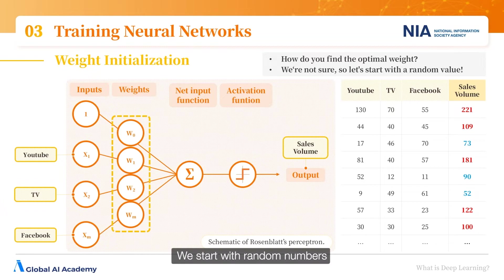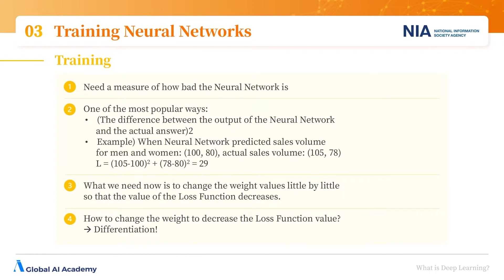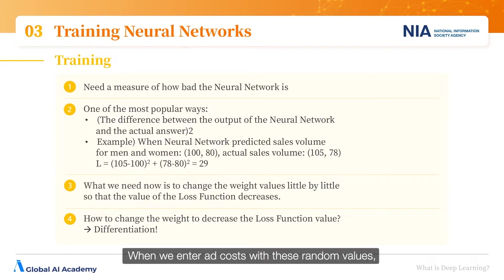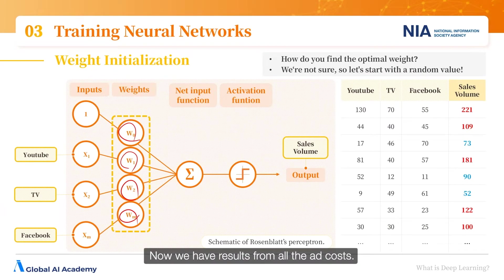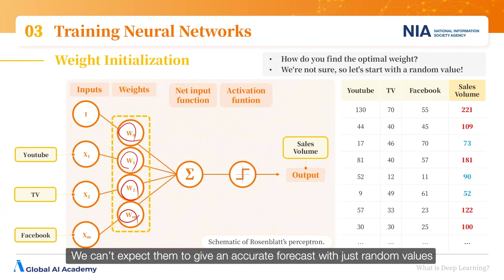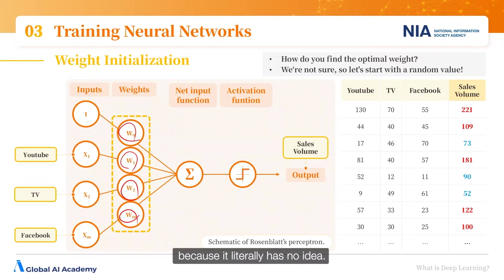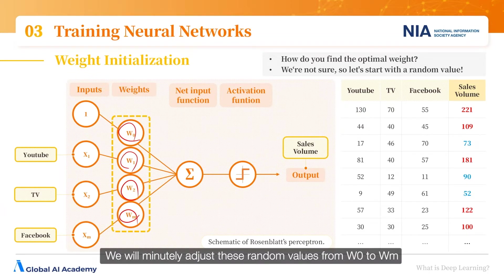Since the computer has no prior knowledge, we input some random values. We don't know anything yet, so we start with random numbers in w0, w1, w2 through wm. When we enter the ad costs with these random values, we get some results — for example, putting 1 in all fields from w0 to wm. The forecast results won't be accurate. We will then minutely adjust these random values from w0 to wm to achieve the accuracy we aim for.